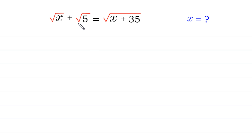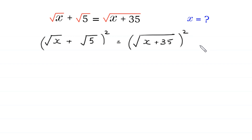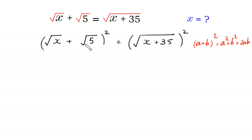First, we square both sides of the equation. According to the algebraic identity (a + b)² = a² + b² + 2ab, we apply this to the left side: square root of x plus square root of 5, whole squared.